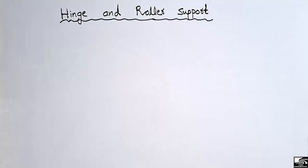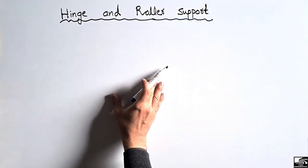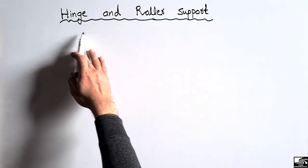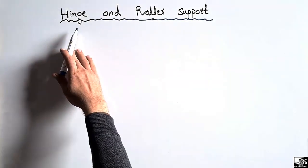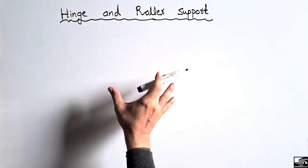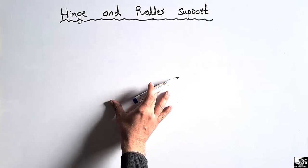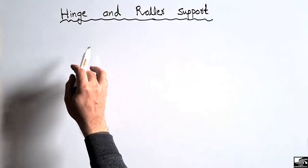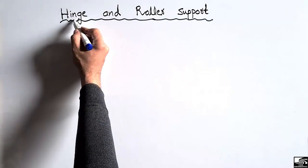Hello guys, welcome back to a civil engineering YouTube channel. Please subscribe to our channel for daily civil engineering videos. Today our lecture is about the hinge and the roller support. In this lecture we are going to talk about the practical use of the hinge and the roller support. Most beams have two types of supports, either the hinge or the roller support. The fixed support is also used in the construction of reinforced concrete buildings, but here we just focus on the hinge and the roller support.